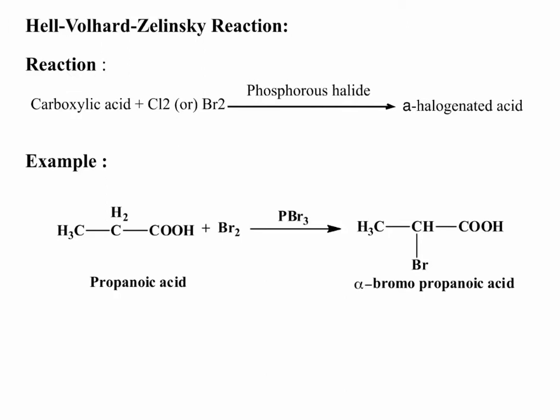Hell-Volhard-Zelinsky reaction: in this reaction, carboxylic acid converts to α-halogenated acid. Carboxylic acid reacts with chlorine or bromine in the presence of phosphorous halide as the catalyst to form α-halogenated acid.